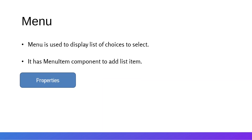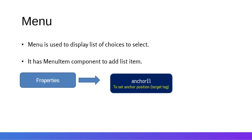Now we can look at some properties of the Menu. The first very important property is the anchor element. The anchor element specifies on which element we need to open this menu. When the element is selected, it opens the list at that element's position — so if we have a button, once we click it, the menu anchors to the button's position and opens the list there.